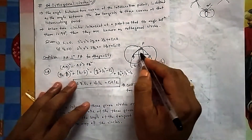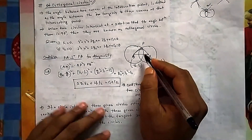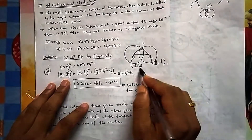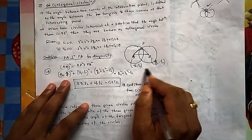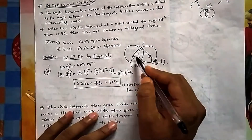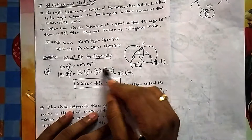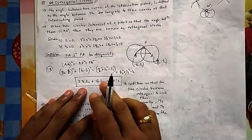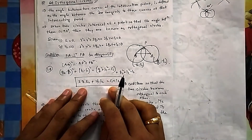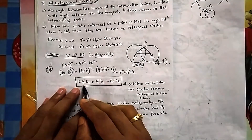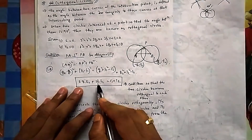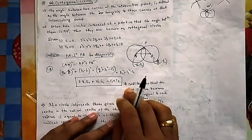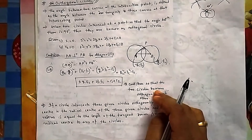Applying the Pythagorean theorem: this square equals this square plus this square. The distance between the two centers squared equals the radius of the first circle squared plus the radius of the second circle squared. Squaring removes the square root. This ultimately becomes your condition for orthogonality: 2g₁g₂ + 2f₁f₂ = c₁ + c₂. This is the important condition for orthogonality.